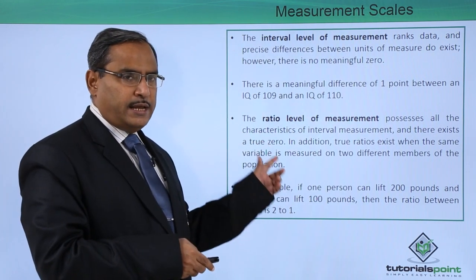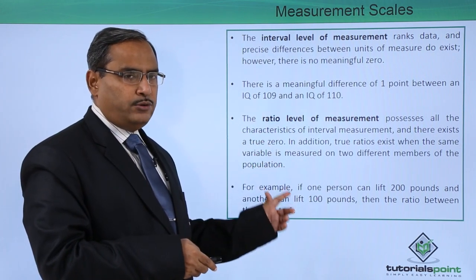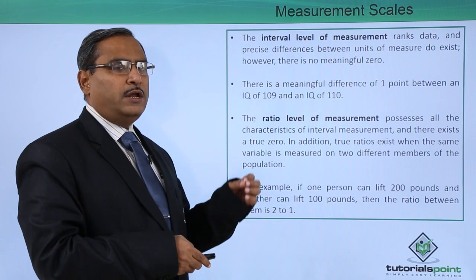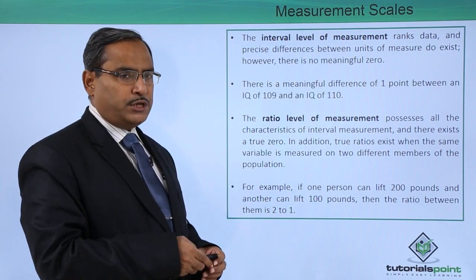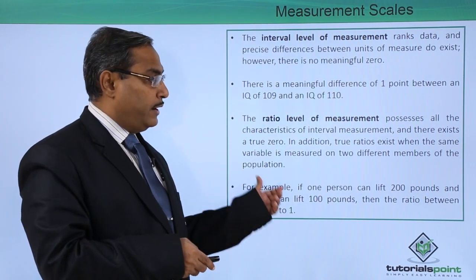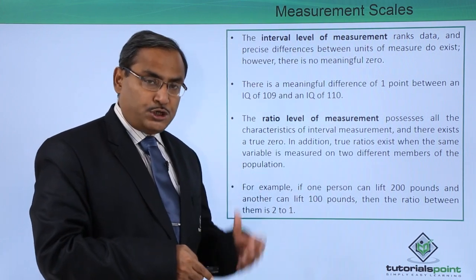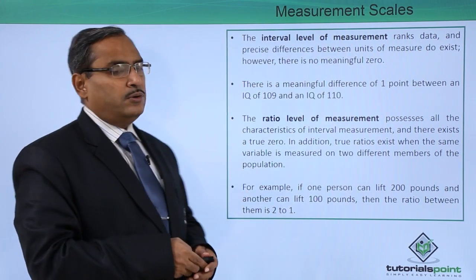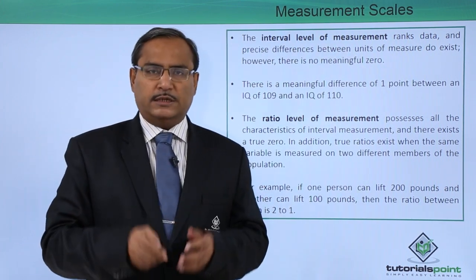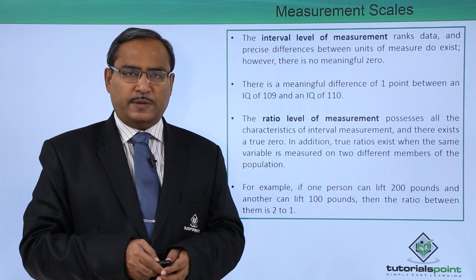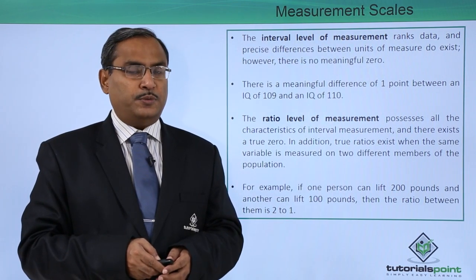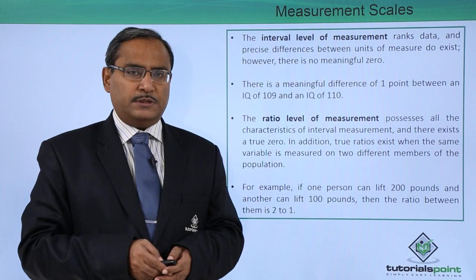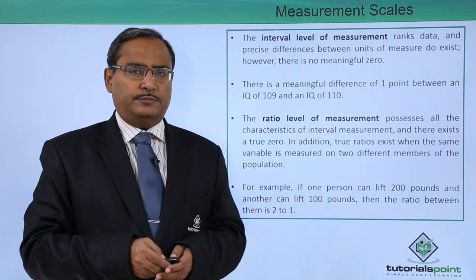In the ratio level of measurement, we calculate 2 different measured values from 2 different members of the population and calculate the respective ratio of those values. In this video, we have discussed the different measurement scales and explained each one with examples. Thanks for watching.